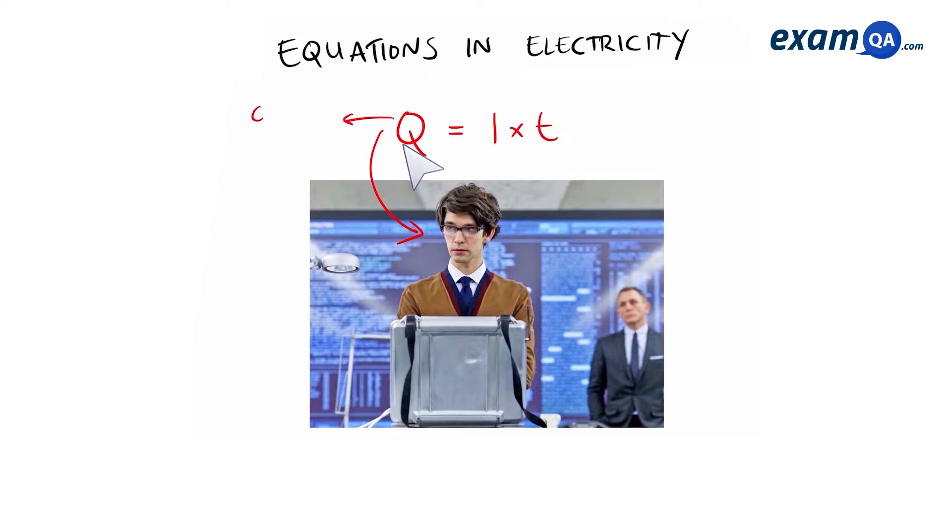Q stands for charge, measured in coulombs. I is current, measured in amps. And T is time, measured in seconds.